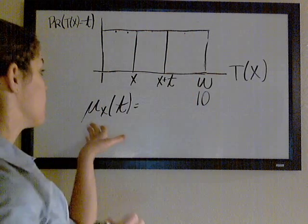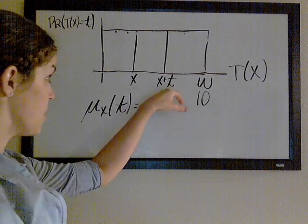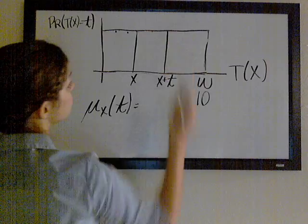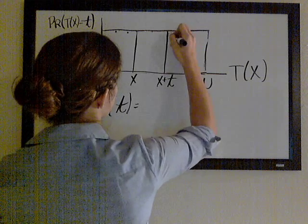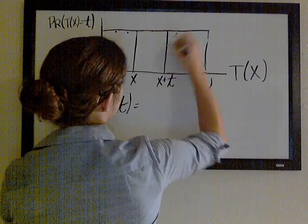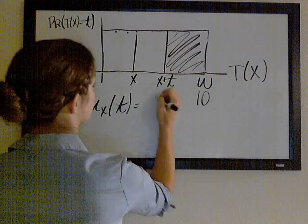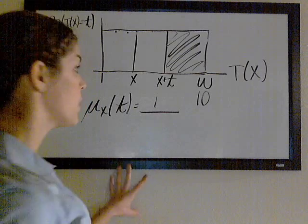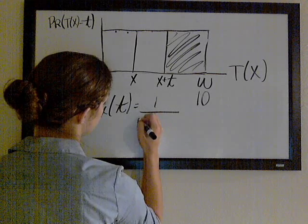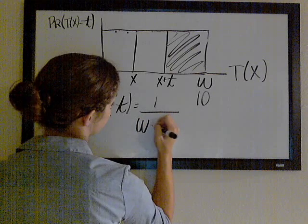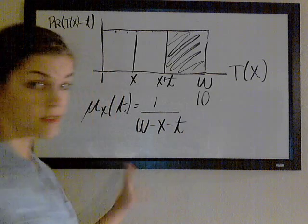If we want to know the force of mortality for an x-year-old after t years, that means we've gotten to a certain point and we're looking at the remaining interval. It's going to be one over the length of that interval, which is omega minus quantity x plus t, or omega minus x minus t.